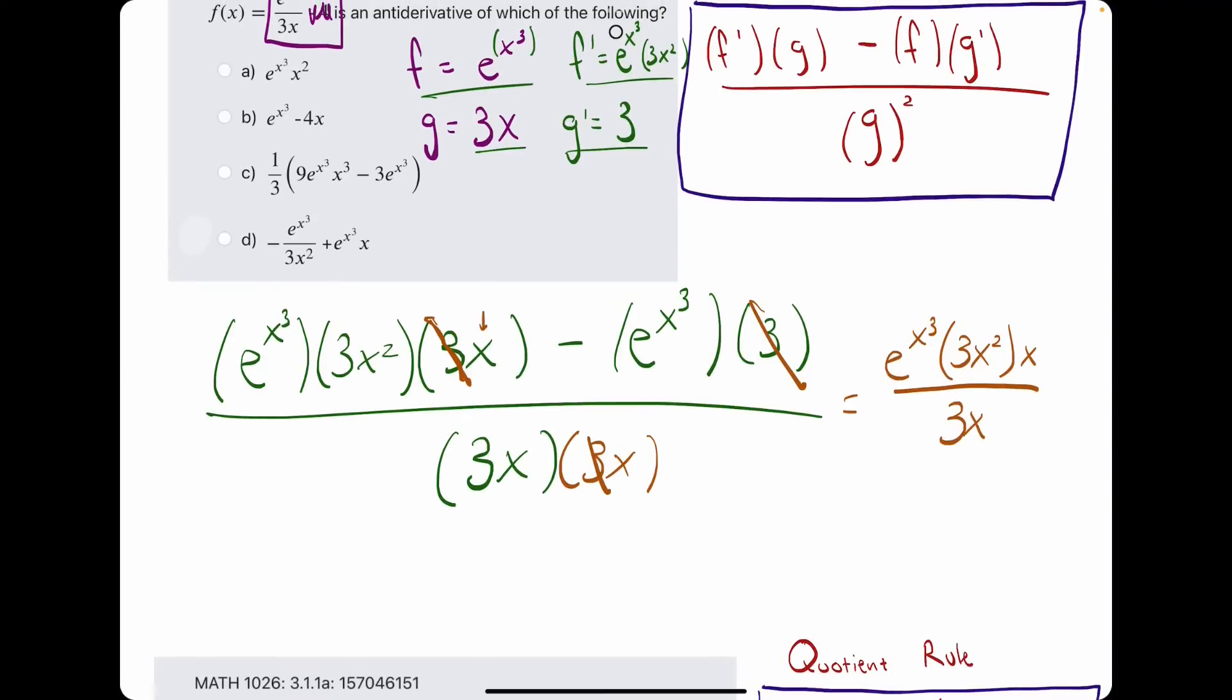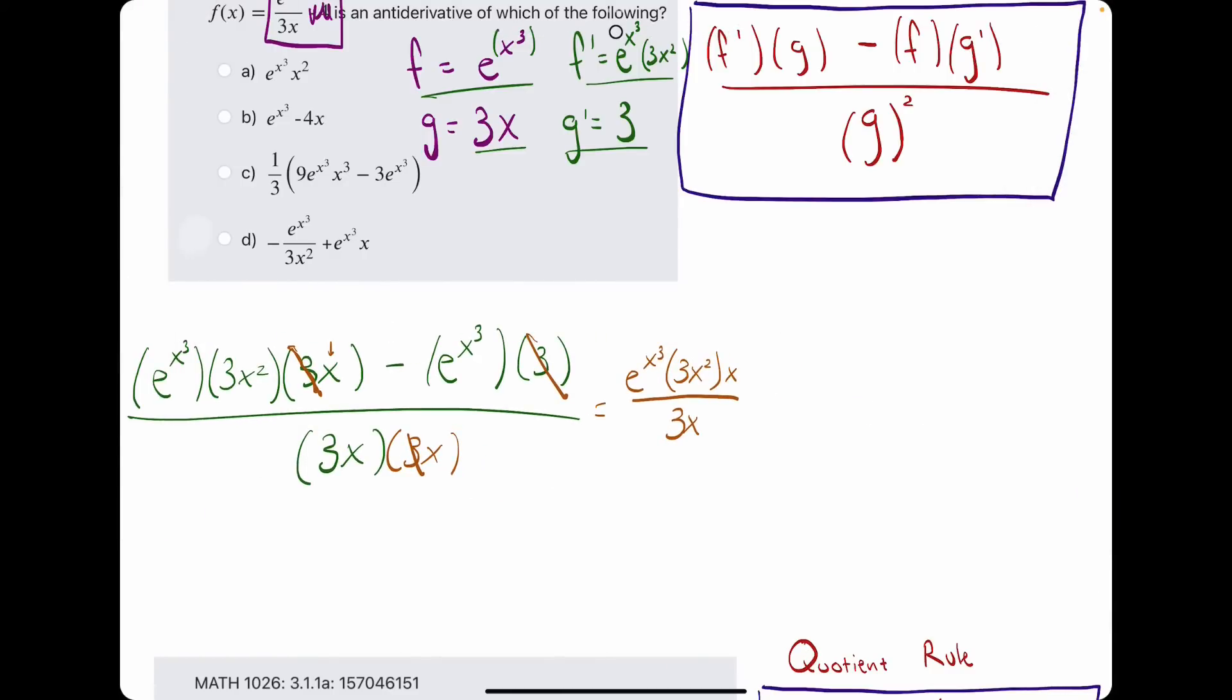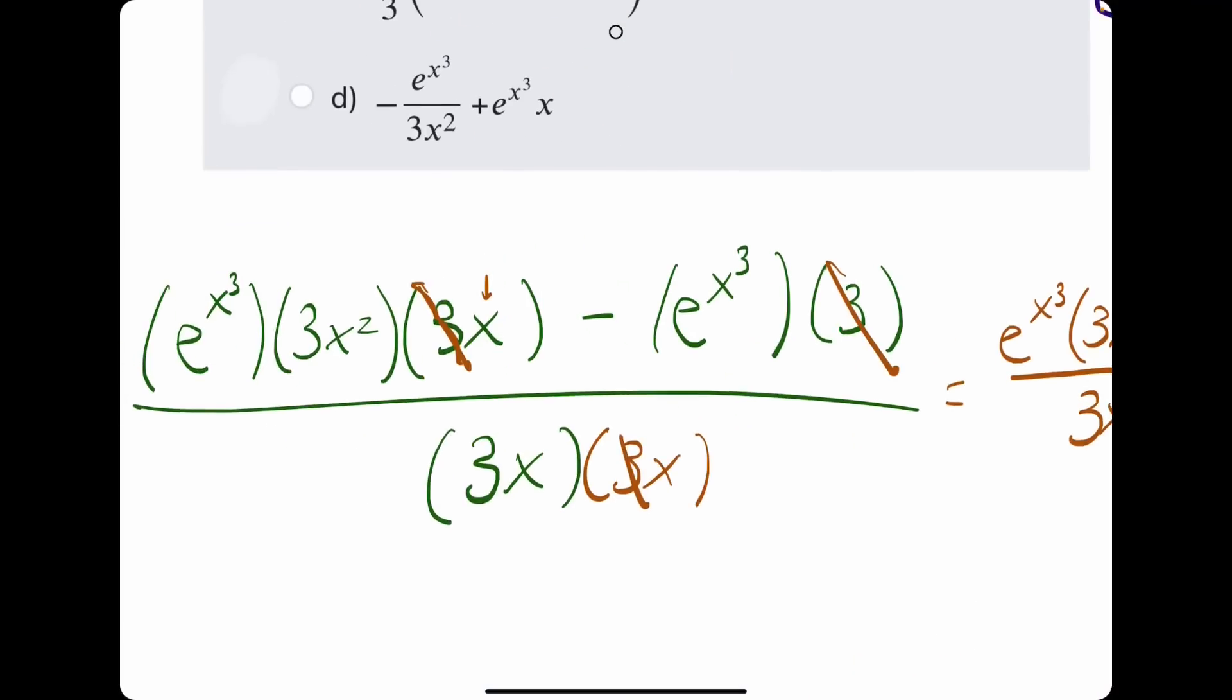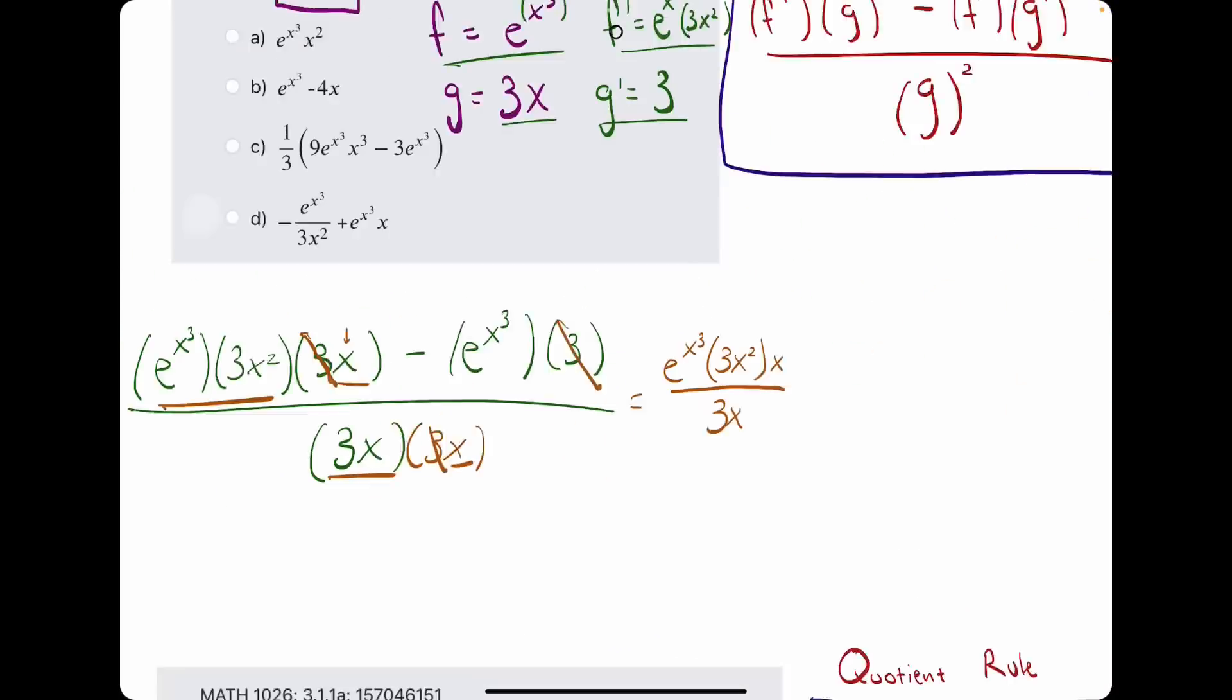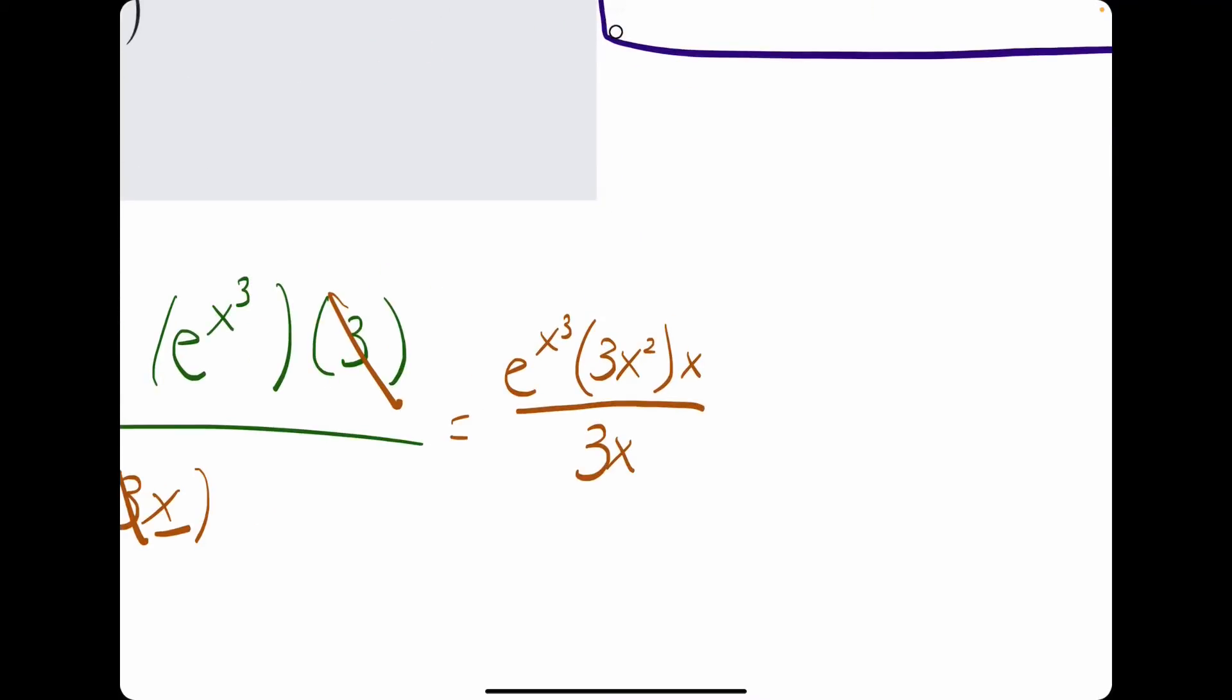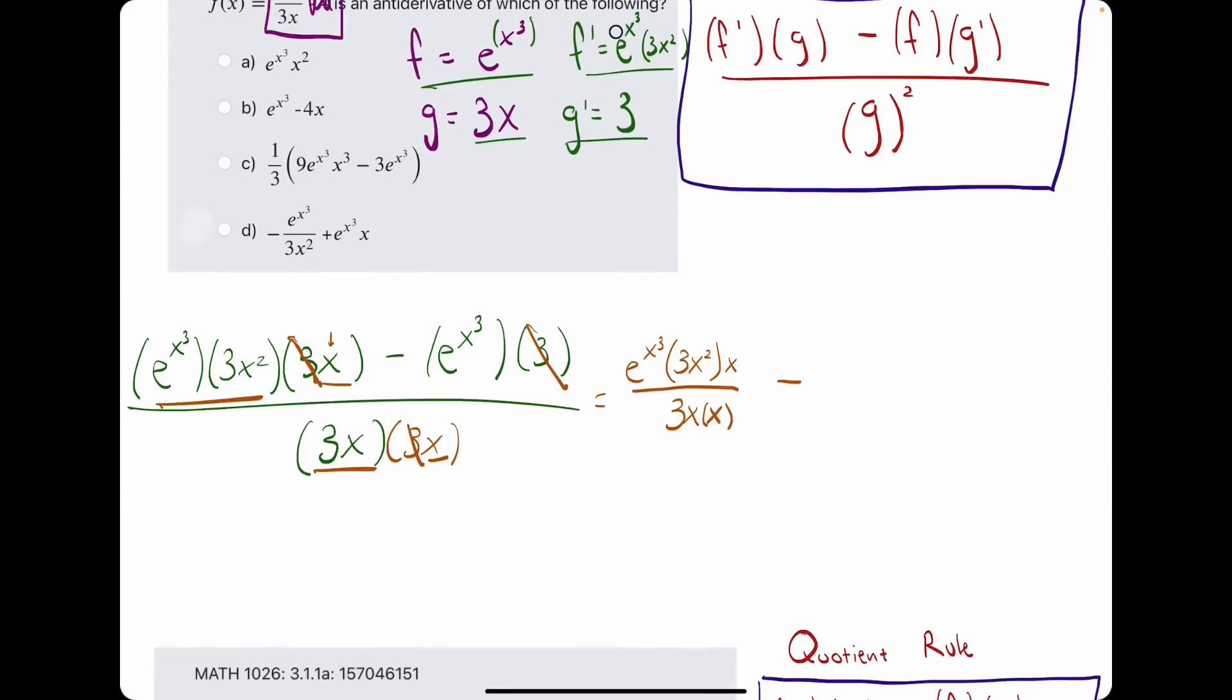Let me make this a little smaller here. All right. So, this is our first term, with all these terms over this, and also, there's this x on the bottom, I almost forgot. So, one more x on the bottom, and then minus what was left from this term, so e to the x cubed, and again over the denominator.